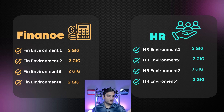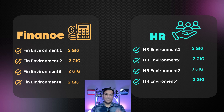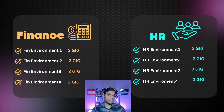Finance has allocations like two gigs, three gigs, two gigs, and two gigs. HR, in one scenario, has seven gigs in one environment — completely different requirements and therefore different capacity consumptions.